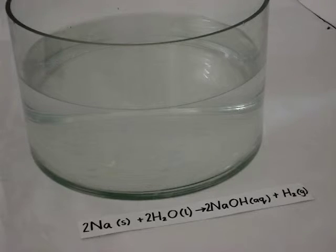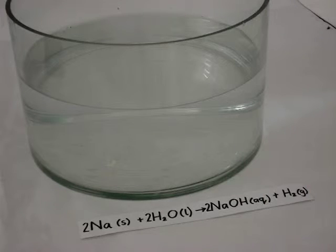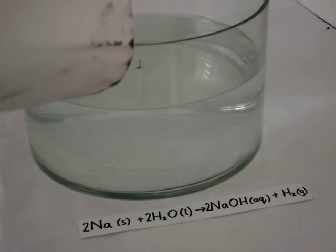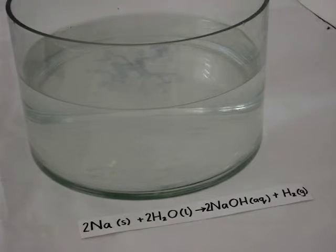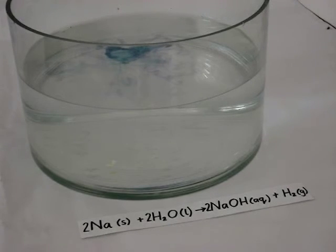And what's left behind after everything's reacted is sodium hydroxide, which is a base. And we can demonstrate that it's a base by using universal indicator. If we add a little bit of universal indicator to this, you can see that it turns the water blue or purple in the presence of the base. Some more indicator. And we know that universal indicator turns blue or purple in the presence of a base.